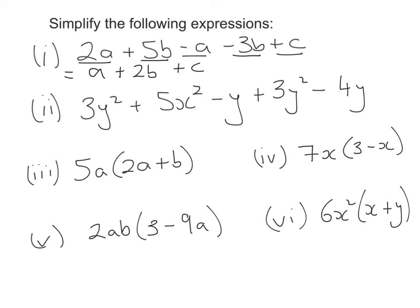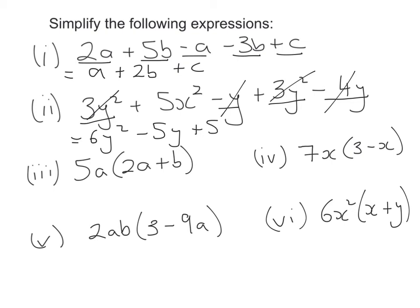For the next one: I have a y squared and another y squared, so that gives me 6y squared. Then I have a minus y and a minus 4y, so that gives me minus 5y, and I have my plus 5x squared at the end.